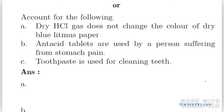B part: antacid tablets are used by persons suffering from stomach pain. Antacid tablets are made up of magnesium hydroxide and aluminium hydroxide — they are actually mild bases. They react chemically with hydrochloric acid present in our body and neutralize the effect. C part: toothpaste is used for cleaning teeth. Toothpaste contains substances that are basic in nature, and in our mouth we have some acid. It neutralizes the acid present in our mouth and cleans your teeth.